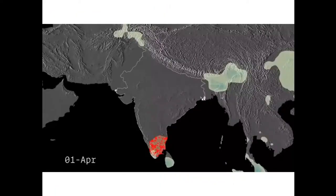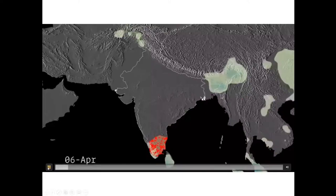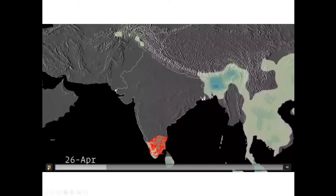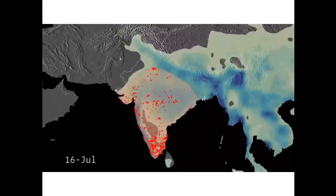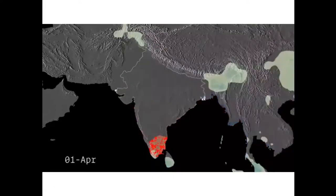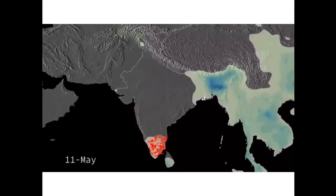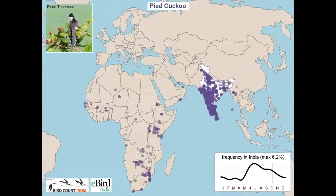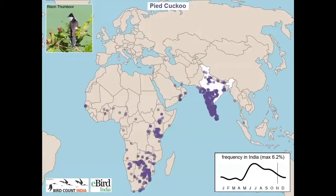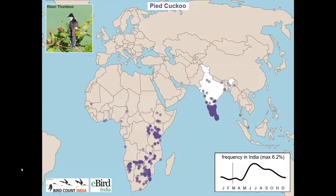Later, MD Majusudan used precipitation data with eBird data to correlate its relation to the monsoon. As you can see, the bird actually starts arriving in the month of May to northern India and stays till September to October. Then there is further work by eBird showing how the bird has a dynamic distribution throughout its range.